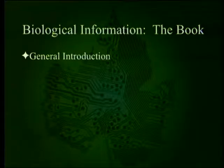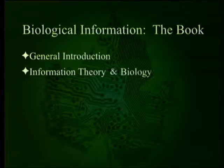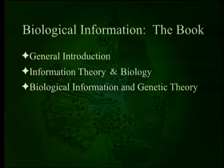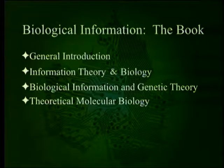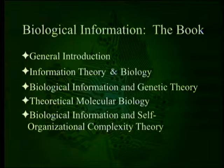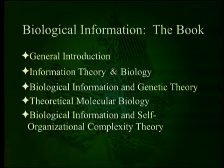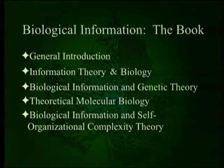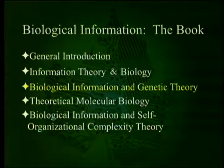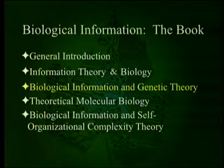The book starts with a general introduction. It has sections on information theory and biology, biological information and genetic theory, theoretical molecular biology, and biological information and self-organizational complexity theory — which is the part that's not intelligent design. Right now we're dealing with the part on biological information and genetic theory.